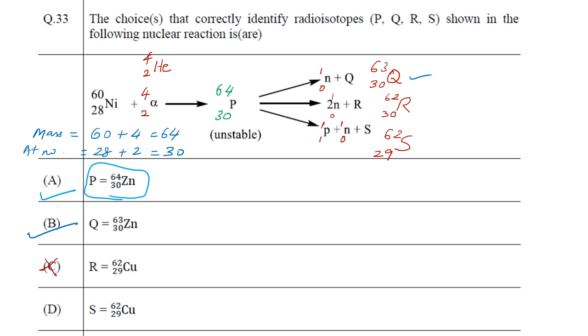The R value must be 62 and 30 only, and not 62 and 29. Coming to D, the S value must be 62 and 29, and here what we see, 62 and 29 is correct which is attributed to copper. So the S value is also correct, so option D is also correct.